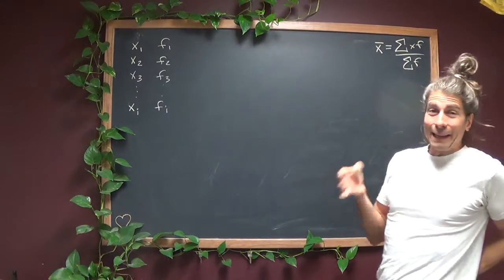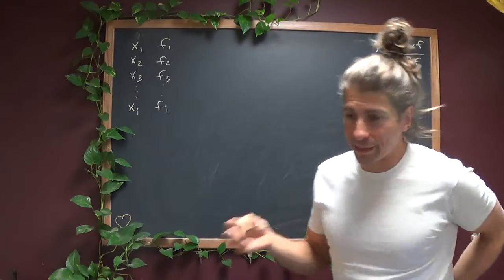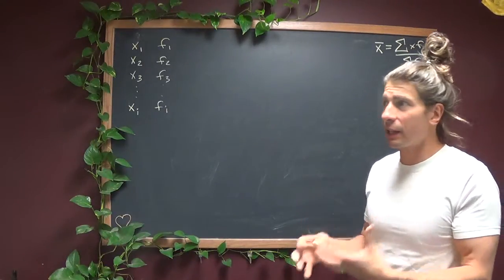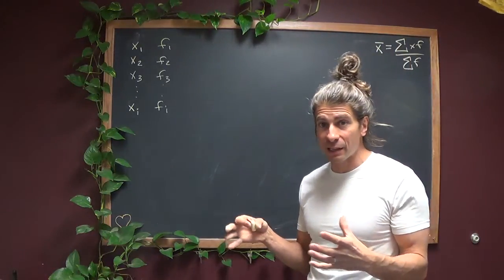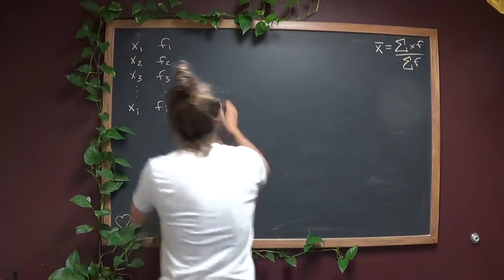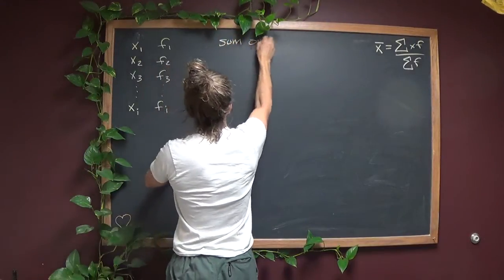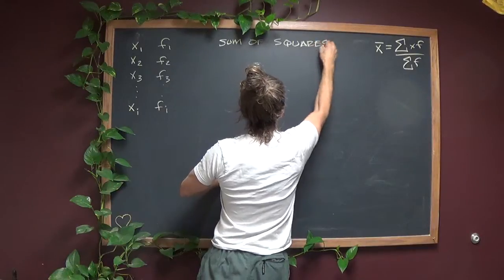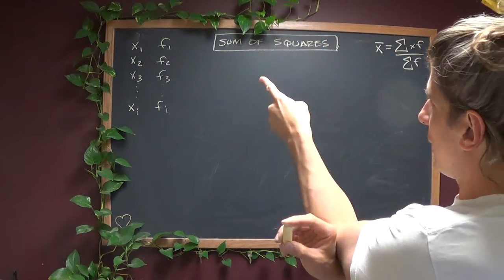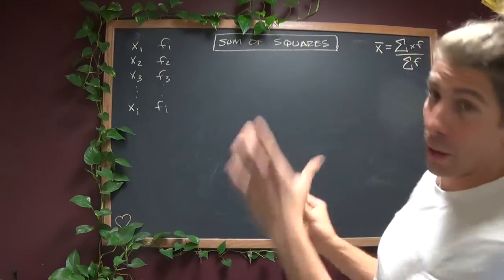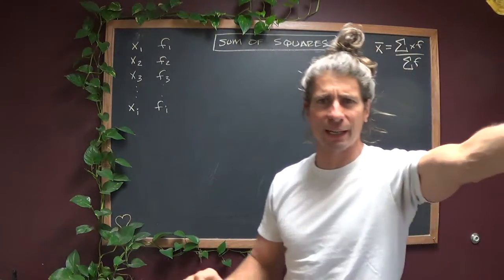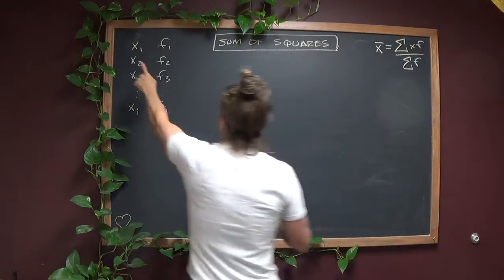Now the idea of standard deviation is that you're measuring on average how far data points are from average. So the crux of looking at standard deviation of any data set is calculating that average distance. Let's focus on the distance first and then work the average bit into it. I'm going to start by looking at something called the sum of squares.